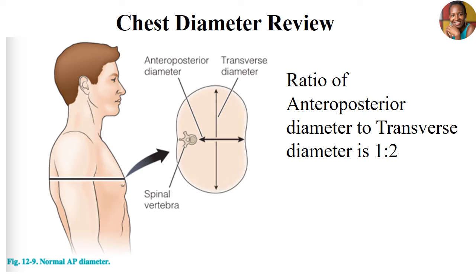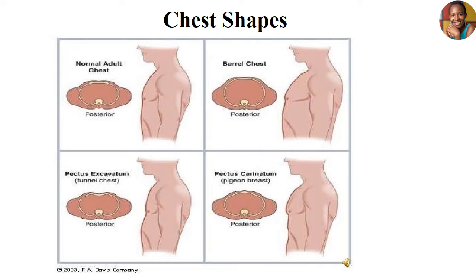So what are the major abnormal chest shapes you need to know when learning about respiratory illnesses? The main ones we'll focus on today are: the barrel chest, the pigeon chest or pigeon breast — also known as pectus carinatum — and the funnel chest, also known as pectus excavatum. These three abnormal chest shapes are key to understanding respiratory illnesses and disorders.